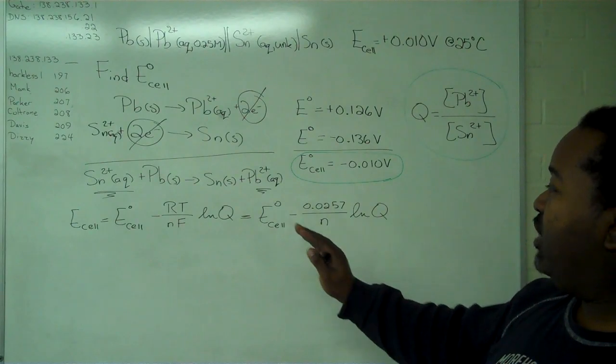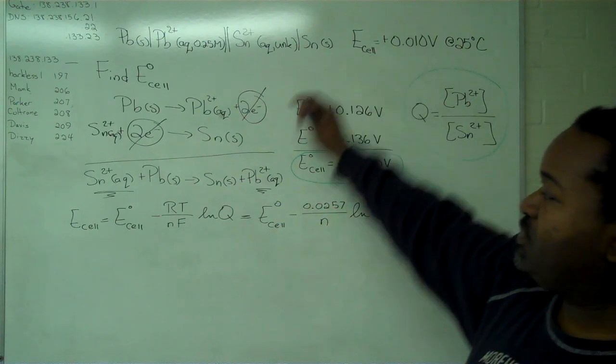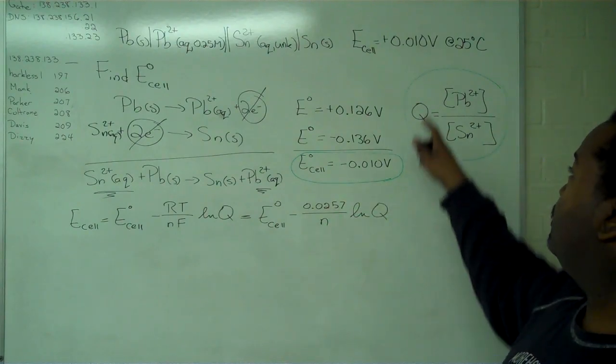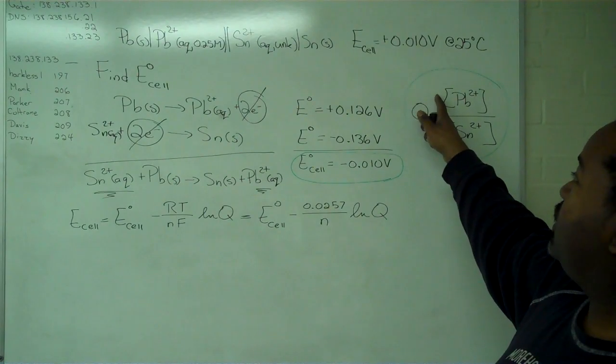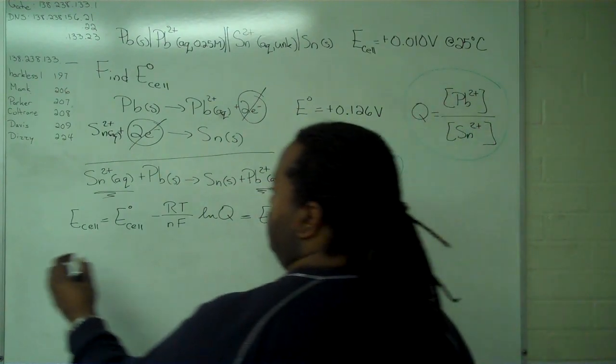We have a value for E cell standard, a value for E cell itself, we know the number of electrons used, and we have an expression for Q where we can substitute the concentration of lead. This means we have only one unknown remaining.